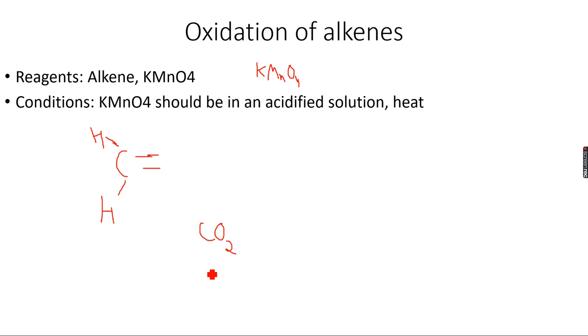If there is one hydrogen atom and one alkyl group—I'm not saying which alkyl group, I'm just saying this is a random alkyl group attached to the carbon atom—then we get a carboxylic acid. So R-C...